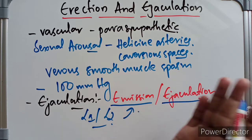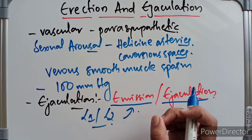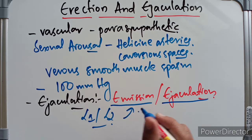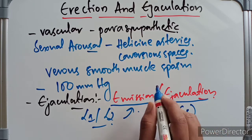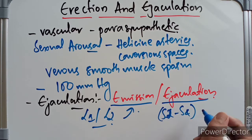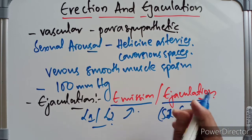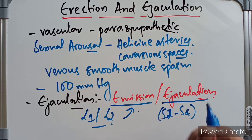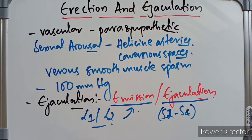The sympathetic outflow also constricts the internal urethral opening to prevent retrograde flow of semen into the bladder. Then the S2 to S4 segments — mainly parasympathetic via the pudendal nerve — lead to rhythmic contraction of the bulbospongiosus, which compresses the penile urethra and expels the fluid to the exterior. This is ejaculation.